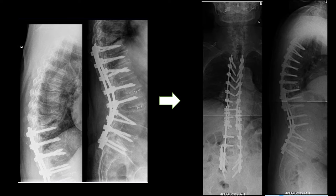The construct was taken more proximally with a circumferential decompression via a VCR approach, and a cage was placed at the level where the proximal junctional kyphosis was.